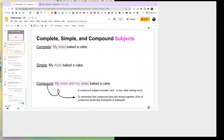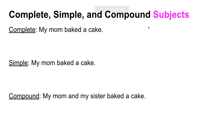One important thing to know is complete, simple, and compound subjects. For the sentence 'My mom baked a cake,' the complete subject is 'my mom' — the entire statement of who the sentence is about. For the simple subject, you want to find the smallest identifier you can use to tell who the subject is. In this case, it's just 'mom.' You don't need 'my mom' — just 'mom' is the simple subject.